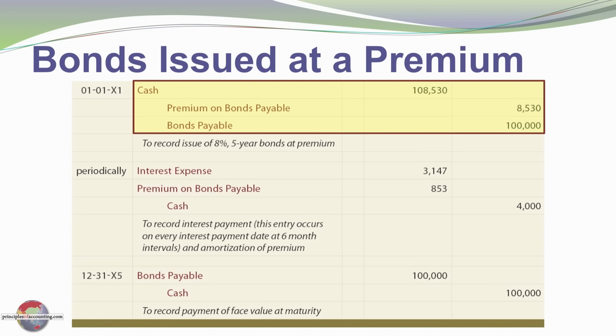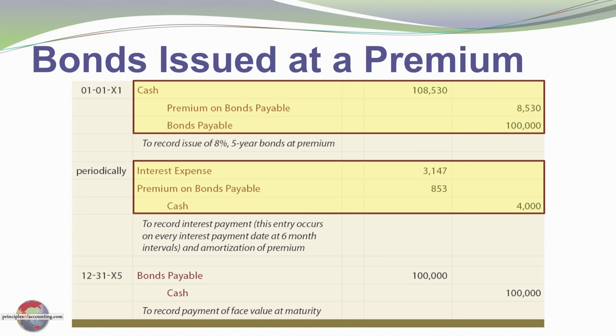Now let's look at journal entries. At issuance we debit cash $108,530 — the price of the bond — credit bonds payable for the face amount $100,000, and the difference of $8,530 goes into the premium on bonds payable account. With each periodic interest payment of $4,000 — hence the credit to cash — we record interest expense of $3,147 and amortize the premium by debiting or reducing the premium account by $853.